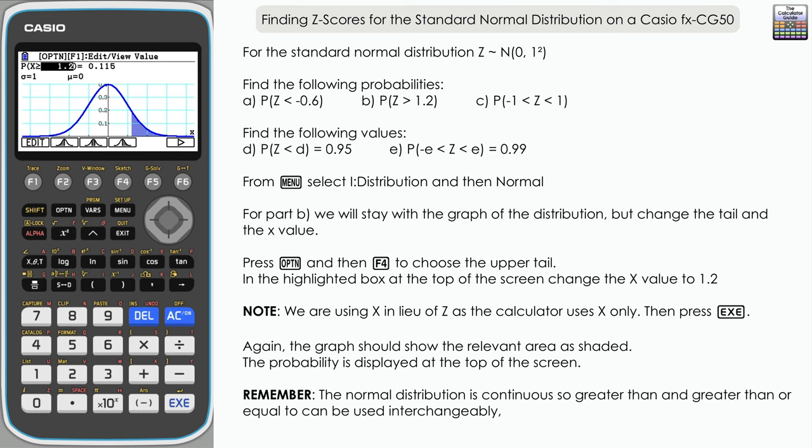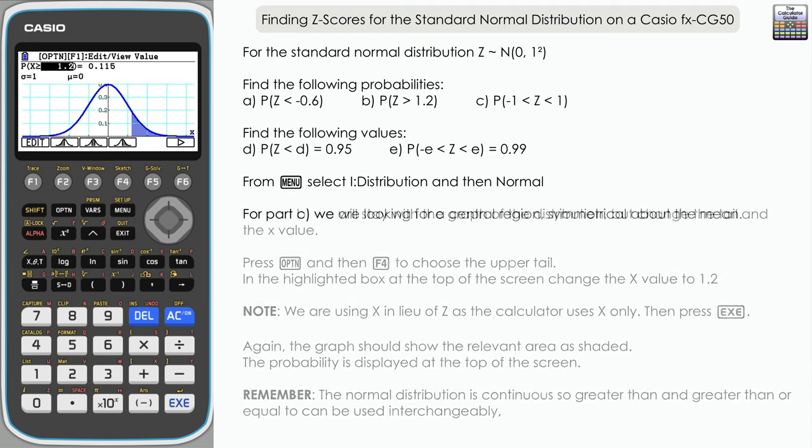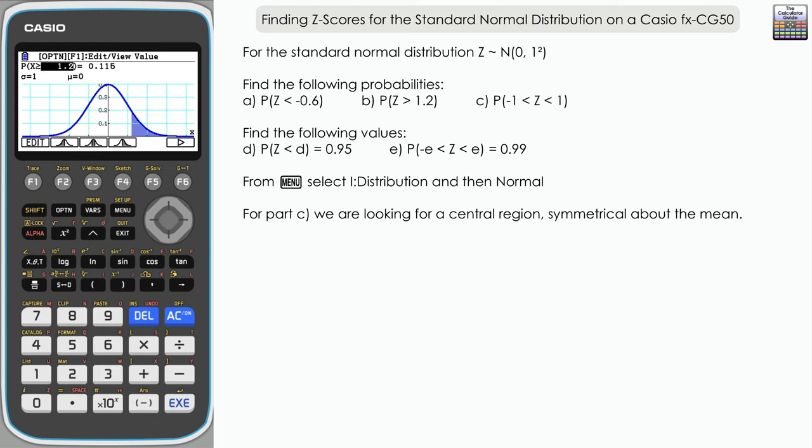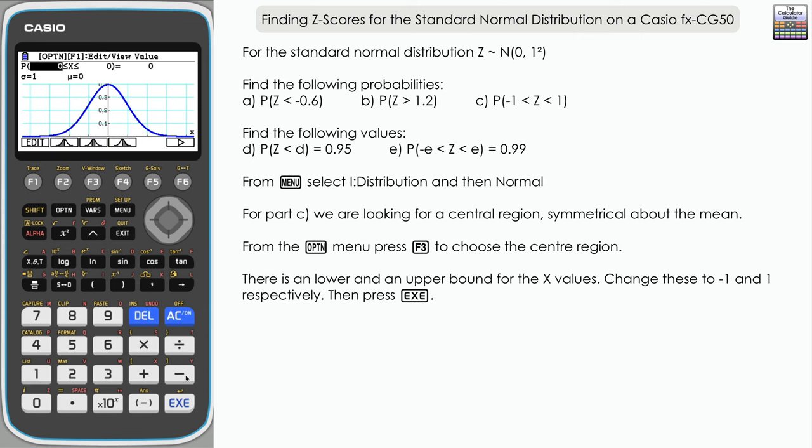Part C, then. We're looking for a central region this time, so Z is between -1 and 1, and we're looking for the probability of a value being in that region. You should still have the option menu displayed here. If not, just press option, and it's F3 for the central region. We've got two boxes to change our X and hence our Z values, so we want the lower bound to be -1, and then navigate right. We want to change the upper bound to 1 and press execute.